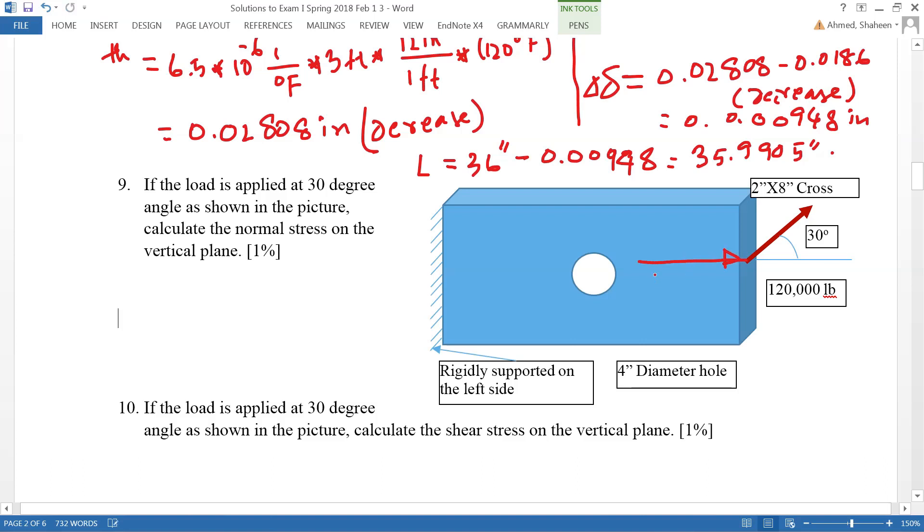In the x direction it's gonna be 120,000 cosine 30 degrees and in the y direction it's gonna be 120 sine 30 degrees. This y direction force will cause this piece to slide right here and break.